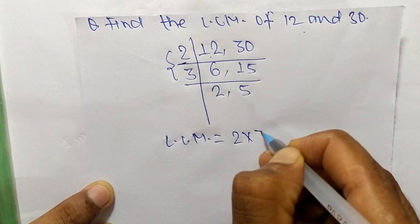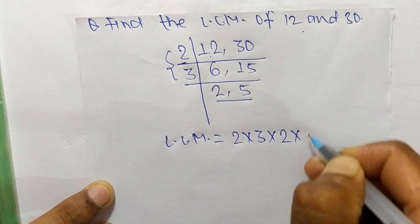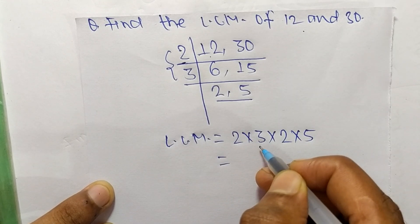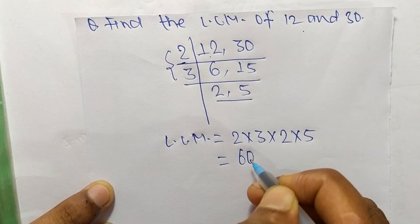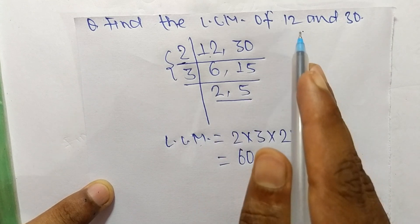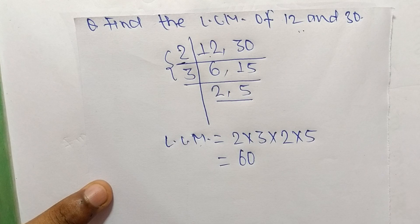And from this part it is 2 times 5. So 2 times 3 means 6, 6 times 2 means 12, and 12 times 5 means 60. So 60 is the LCM of 12 and 30. So this much for today and thanks for watching.